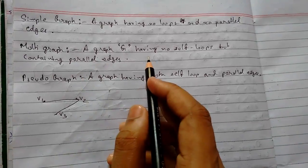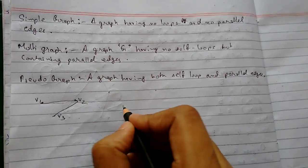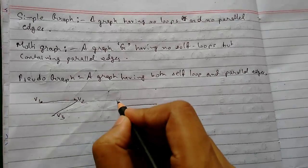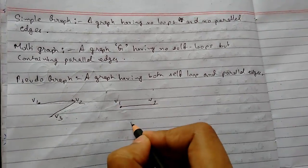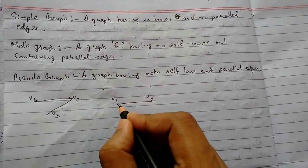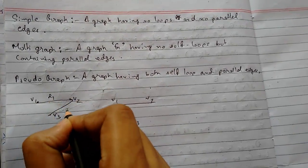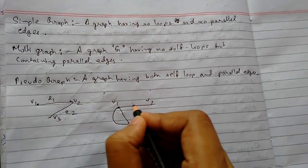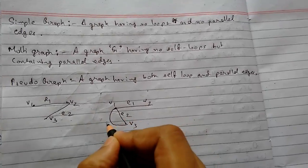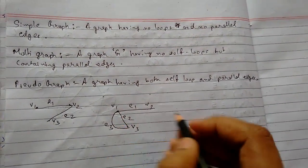Multi graph: a graph having no self-loops but containing parallel edges is called a multi graph. For example, vertices V1, V2, V3 with edges E1, E2, E3 where two parallel edges exist between vertices — here we see that there are two parallel edges.